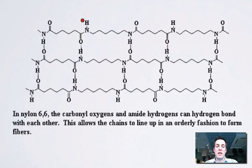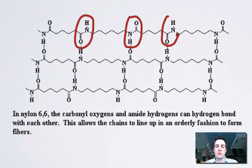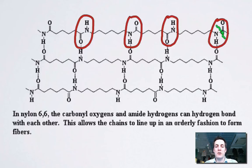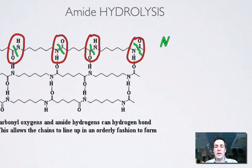Going along the polymer chain of nylon, I'm going to highlight any amide functional groups. Once I've done that, I can imagine what happens if I break these amide groups — between the nitrogen and the carbon-oxygen double bond. Breaking all these amide groups, and looking at one monomer: I've got NH2 at one end — I'll circle it in green to distinguish it from the other monomer in a moment.